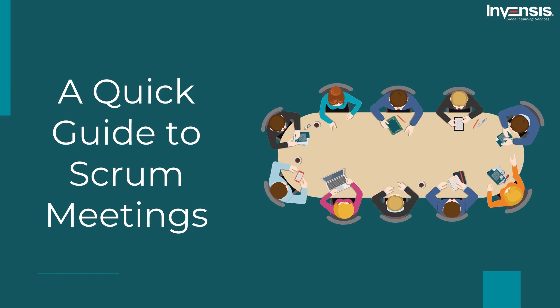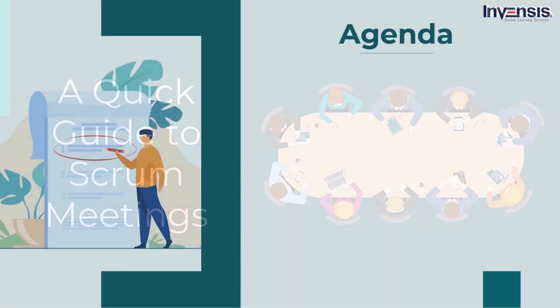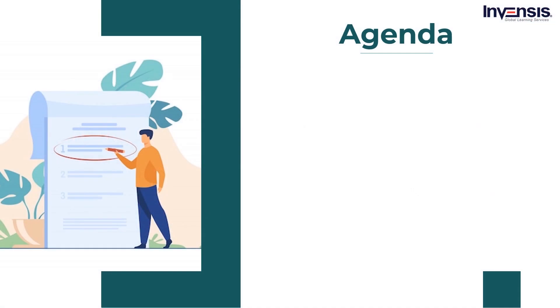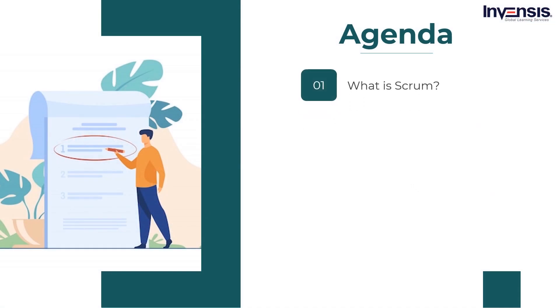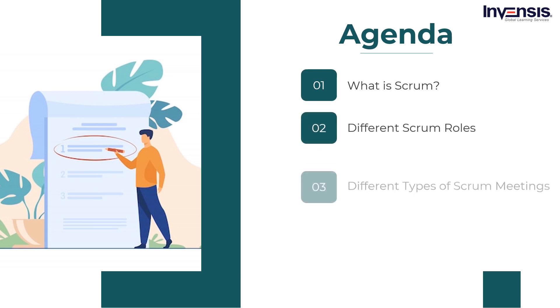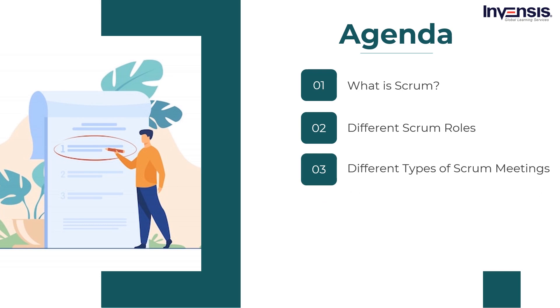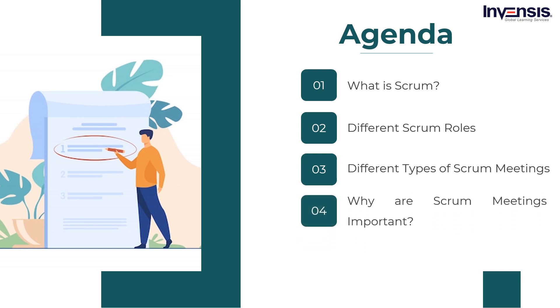In this video, we are going to talk about a quick guide to Scrum meetings. We will start our session with a brief understanding of what Scrum is. Then, we will understand the different Scrum roles and the different types of Scrum meetings. Moving on, we will discuss why Scrum meetings are important and then conclude the session by knowing how to improve Scrum meetings.